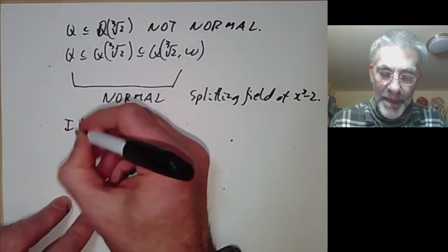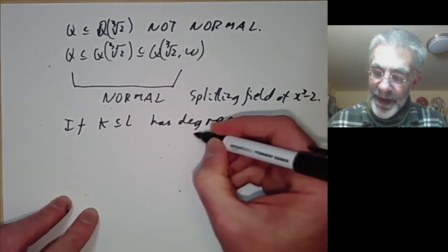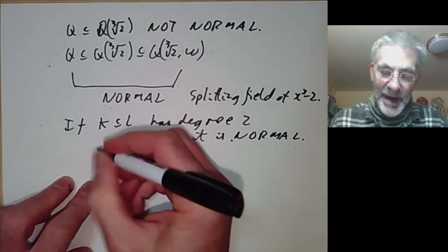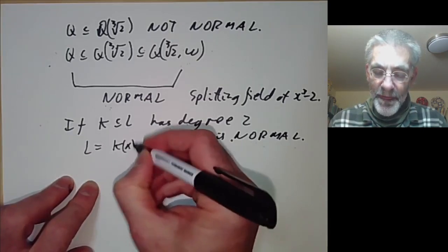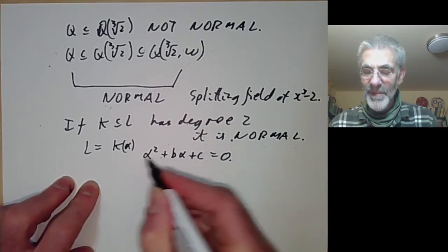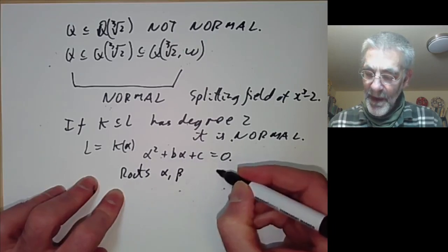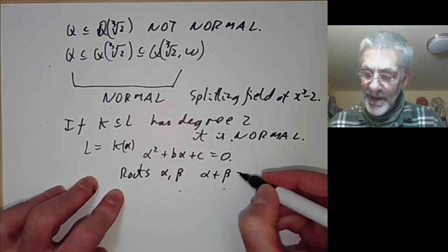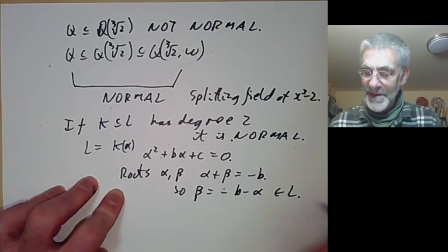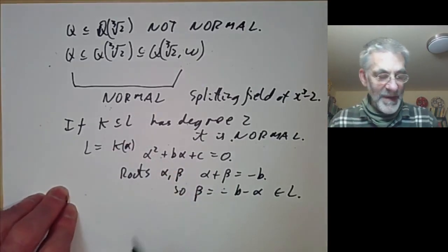Also, we can see that if k ⊂ L has degree two, it is normal. This is easy to see because if L = k(α), then α satisfies α² + bα + c = 0 for some b and c. The roots α and β of this polynomial satisfy α + β = −b, so the other root β = −b − α is in L. Therefore L is automatically a splitting field and hence a normal extension.